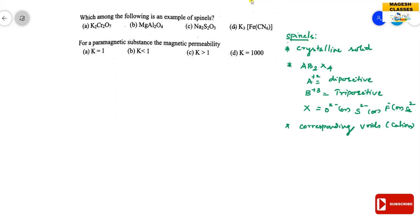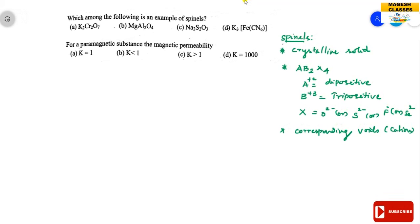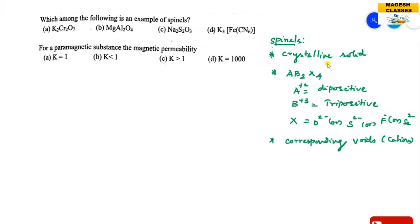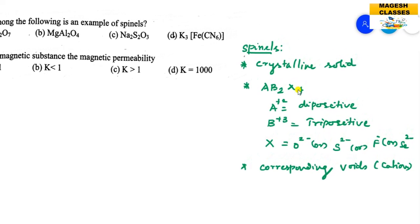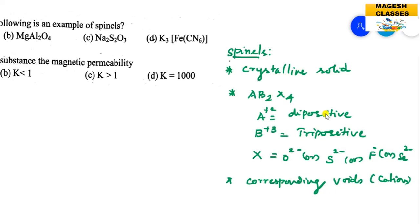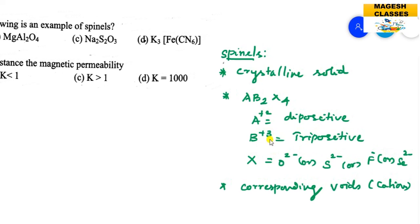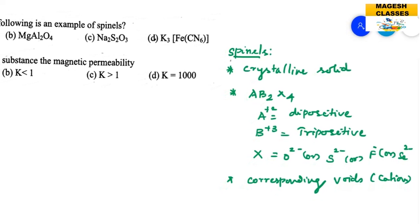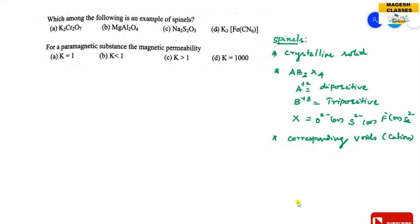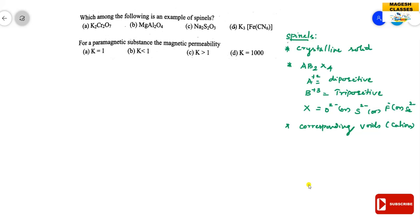So these are about the spinels. Spinels are crystalline solids having the molecular formula AB₂X₄, where A is the dipositive cation and B is the tripositive cation — two in number — and X is oxide, sulphide, fluoride, or selenide — four in number. The cations A and B occupy the corresponding voids in the solids.